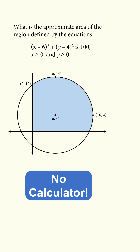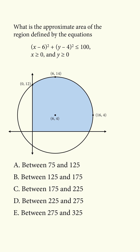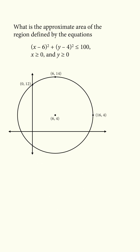We have a circle with center (6, 4), and we're given the points (0, 12), (6, 14), and (16, 4). The answer choices are between 75 and 125, 125 and 175, 175 and 225, 225 and 275, and 275 and 325.